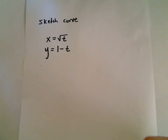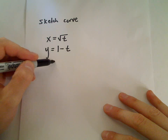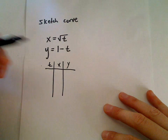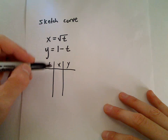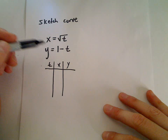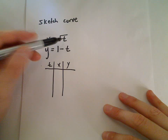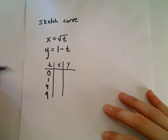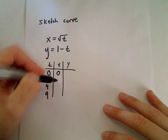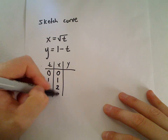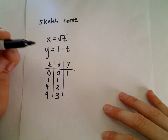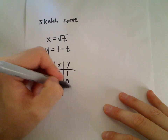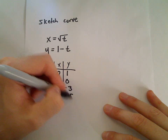Suppose we have x equals square root of t and y equals one minus t. We'll pick values for t to compute x and y. Notice there are no explicit restrictions on t given, but t must be greater than or equal to zero since it's under the square root. We'll use t equals zero, one, four, and nine. The x values are zero, one, two, and three. The y values are one minus zero equals one, one minus one equals zero, one minus four equals negative three, and one minus nine equals negative eight.